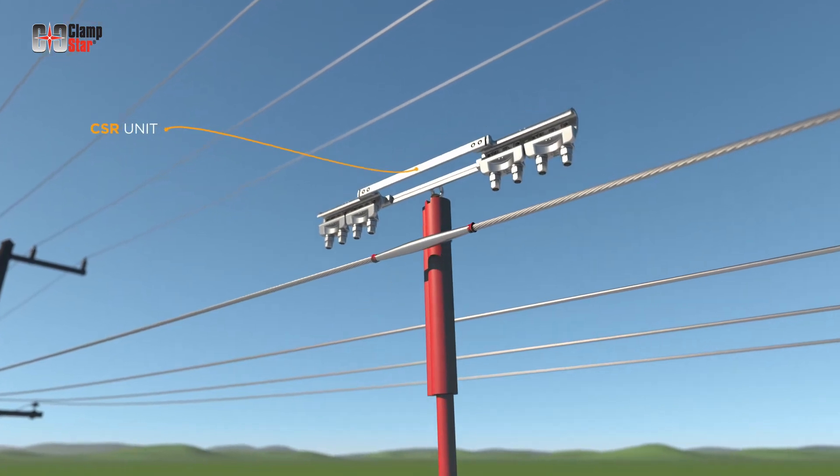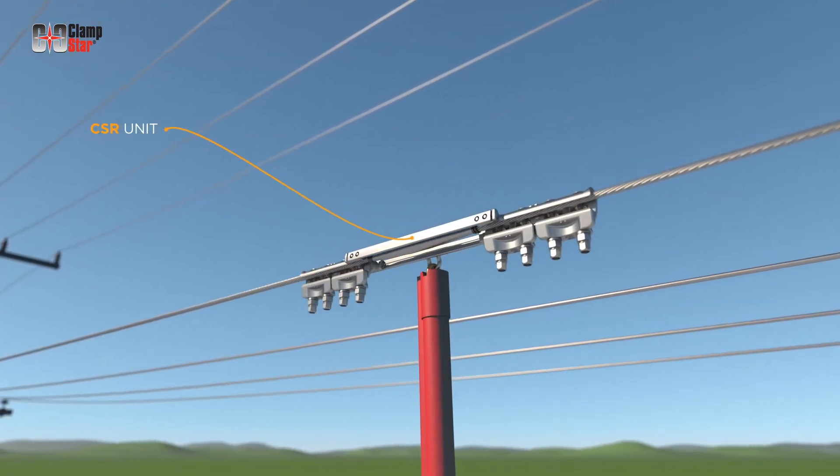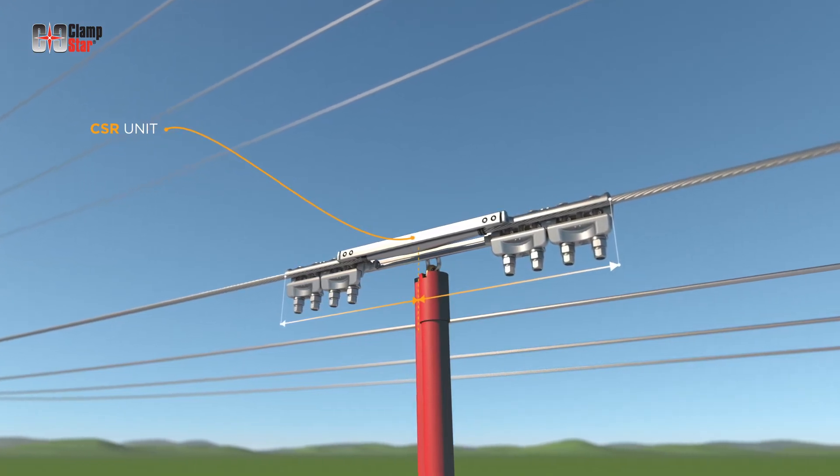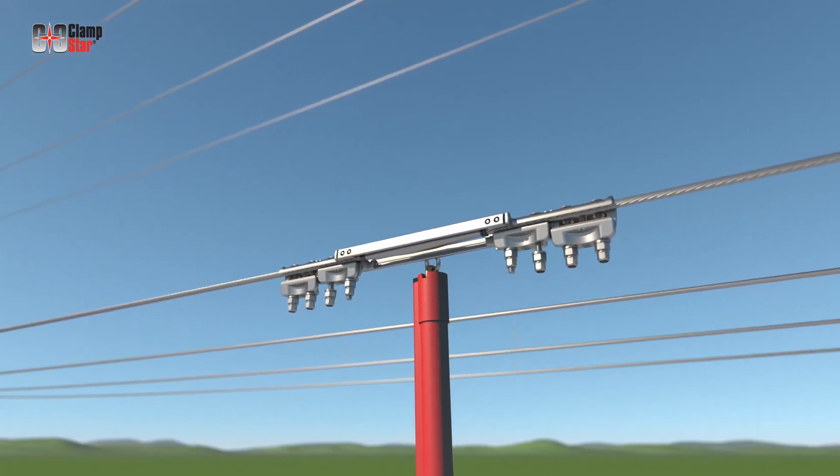Place the ClampStar unit on top of the conductor with the splice centered between the left and right side of the unit. Snug up one or two fasteners to maintain the unit's position.